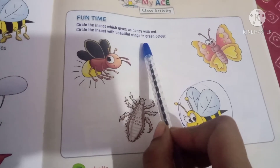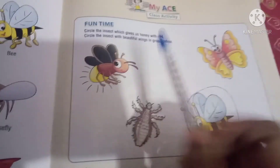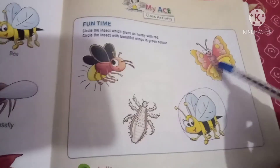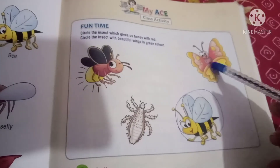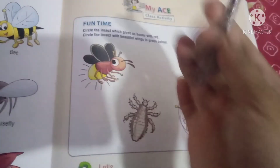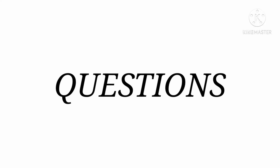Now circle the insect with beautiful wings in green color. So who has wings in green color? Circle it.